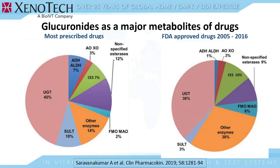The magnitude of UGT contribution to drug metabolism is illustrated by these two pie charts of phase 2 enzymes. The charts show percentages of drugs with major UGT metabolites in the 200 most prescribed drugs on the left, and on the right in drugs approved by the FDA between 2005 and 2016. UGTs were responsible for phase 2 metabolism of 38% to 45% of medicines included in this analysis. Taking into account phase 1 metabolism, the overall contribution of UGTs was about 11%. UGTs also make additional contributions to drug metabolism by forming secondary metabolites.